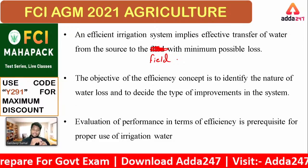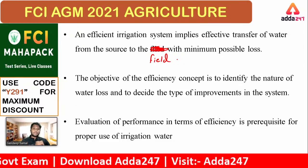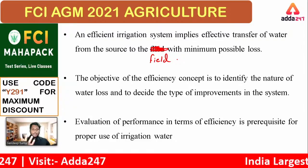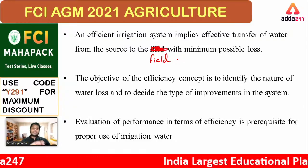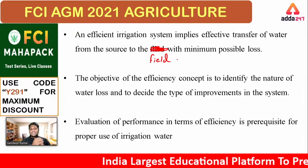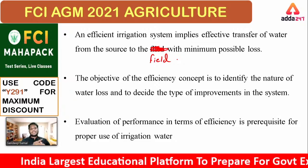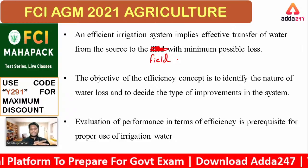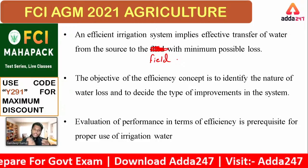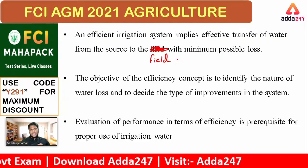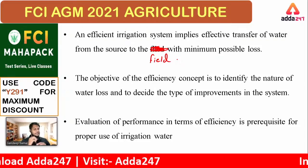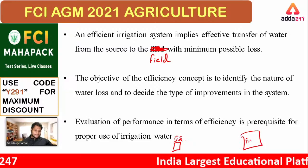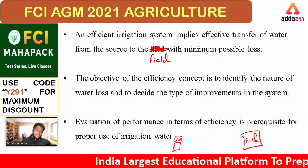The total amount of water you are supplying to the field is not entirely used by the plants. Some water is lost to groundwater, evaporation, and transpiration, while the remaining water is used by the plants. This phenomenon decides the efficiency of the irrigation system. An efficient irrigation system implies effective transfer of water from the source with minimum possible loss. So here we are looking at water use efficiency in regard to the irrigation system.